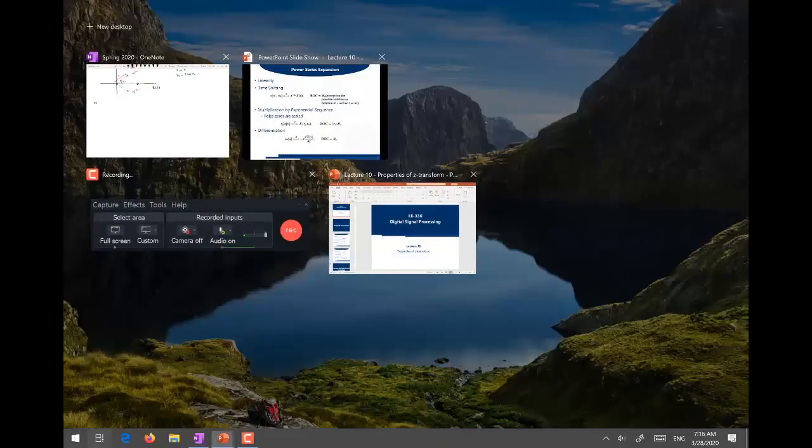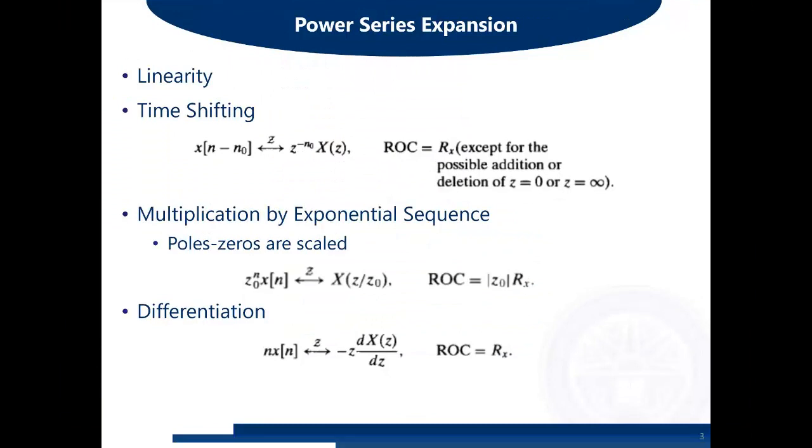The next property is differentiation. If you multiply the time domain sequence X(n) with simply n, the time index, then the consequence in the Z-transform domain will be: you have to take the derivative of the Z-transform and multiply it with minus Z. The ROC will not be changed.